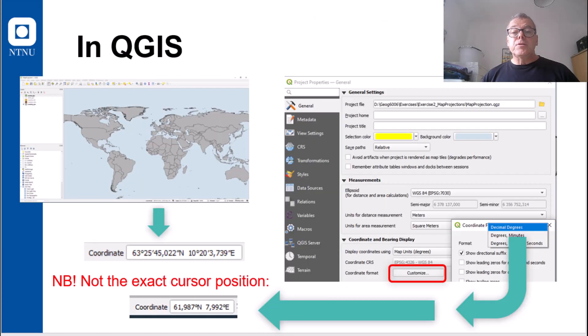In QGIS, this could be altered in the project properties, entry the general tab. And here in the coordinate and bearing display, click on customize. And you can set this to other decimal degrees or degrees minute seconds as you prefer. And this is how it may look them differently in QGIS.